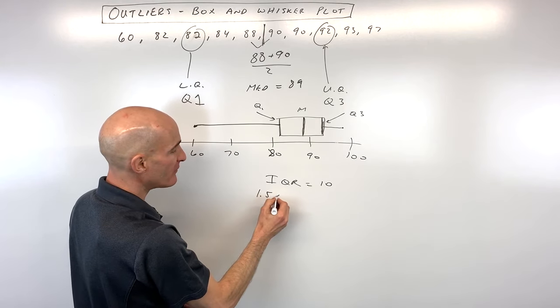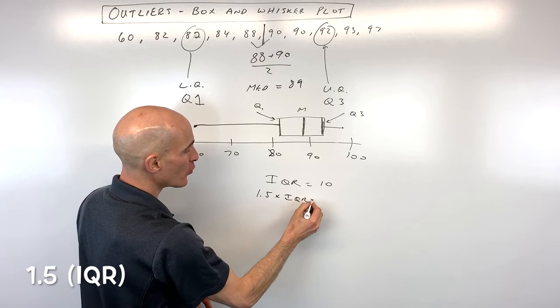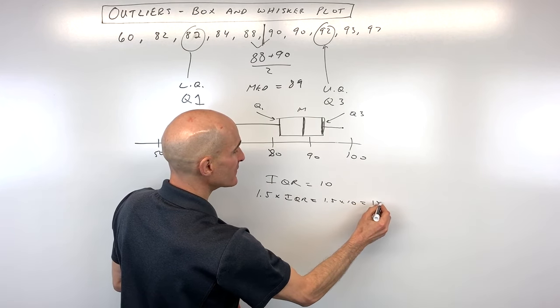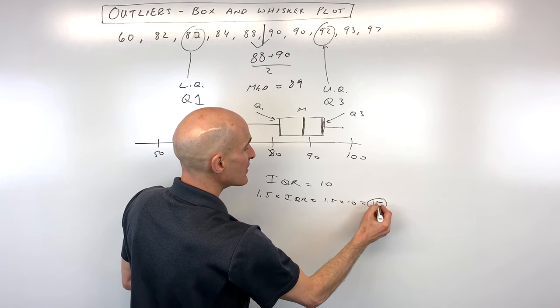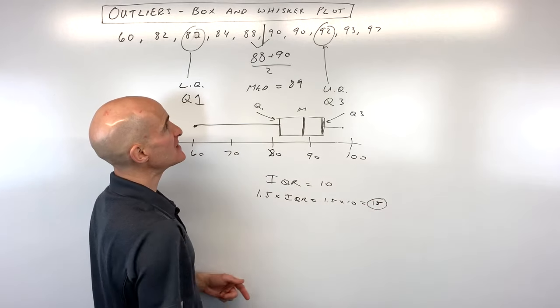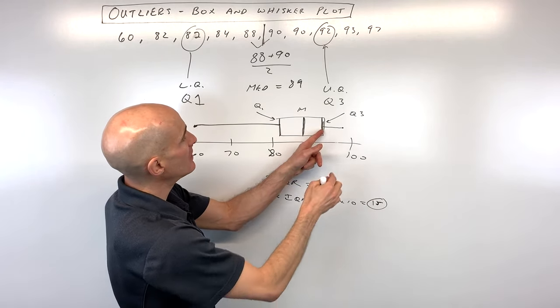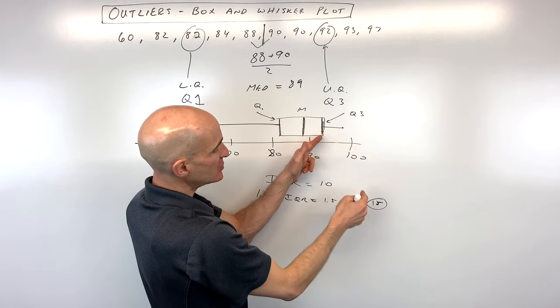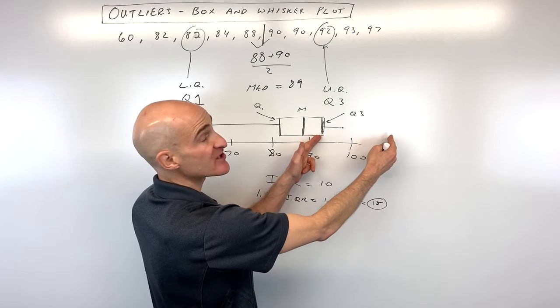We want to then take 1.5 times that interquartile range. 1.5 times 10 is 15. Okay, so then what you want to do is you want to take that number, 15, and you want to add it to the third quartile. So in this case, this is 92. If we take 92 plus 15, that gives us 107.